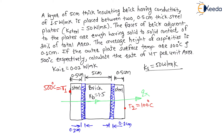In the surface roughness region, the brick surface is rough but steel is not. Only 30% of the brick area is in contact with the steel in this 0.1 cm thickness. For the remaining 70% of area there is conduction through air.